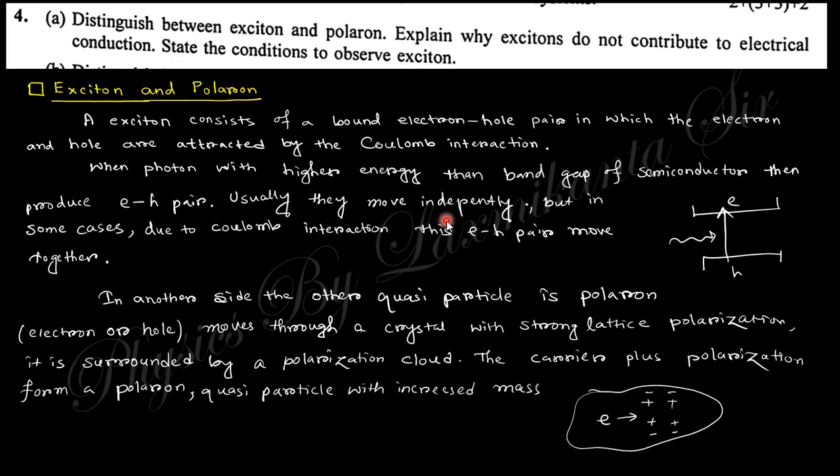Total charge of exciton is zero, but there is an effective mass. What do you mean by polaron? Polaron is actually a quasi-particle for electron or hole. In exciton, electron-hole pairs combine and move together, but polaron is either electron or hole.